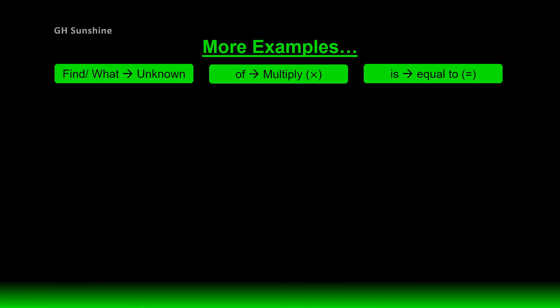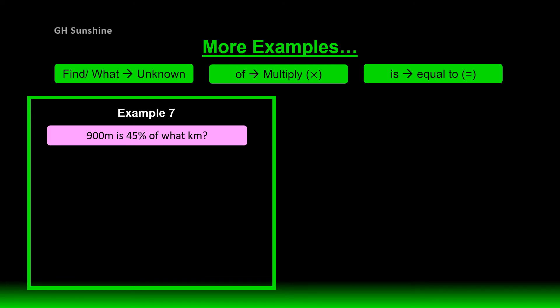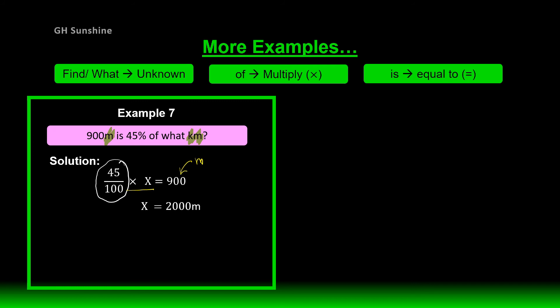Let's look at another example. Example 7 — 900 meters is 45% of what kilometer? Notice the different units here: meters and kilometers. You can solve using the basic percentage formula first. 45% converts to fraction form 45 over 100, or decimal form 0.45. 'Of what kilometer' means times X, and 900 is in meters. Calculating X gives X equals 2000 meters.